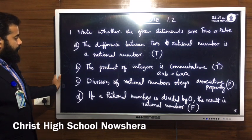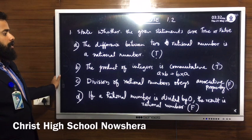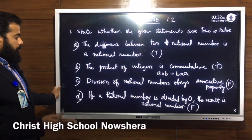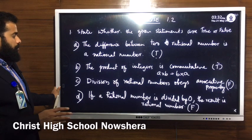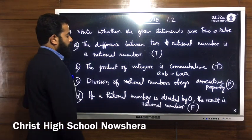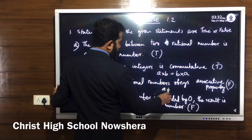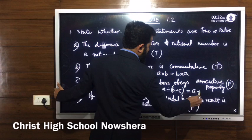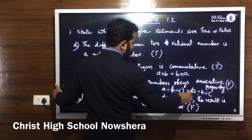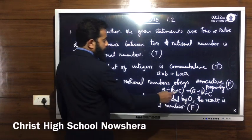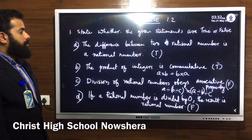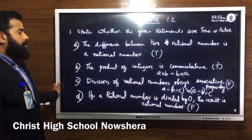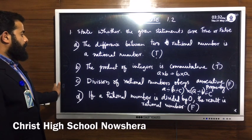For the third statement: division of rational numbers obeys associative property. Division of rational numbers does not obey the associative property, because by dividing a rational number by another rational number — that means A divided by B divided by C — rational numbers are not obeying the associative property, so the given statement is a false statement.